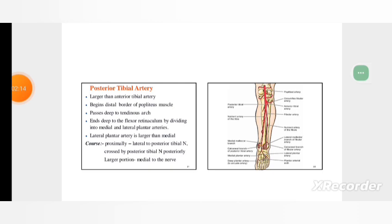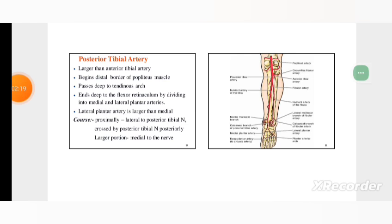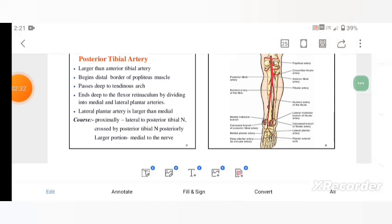This is the diagram of the posterior tibial artery. Posteriorly, larger portion medial to the nerve.